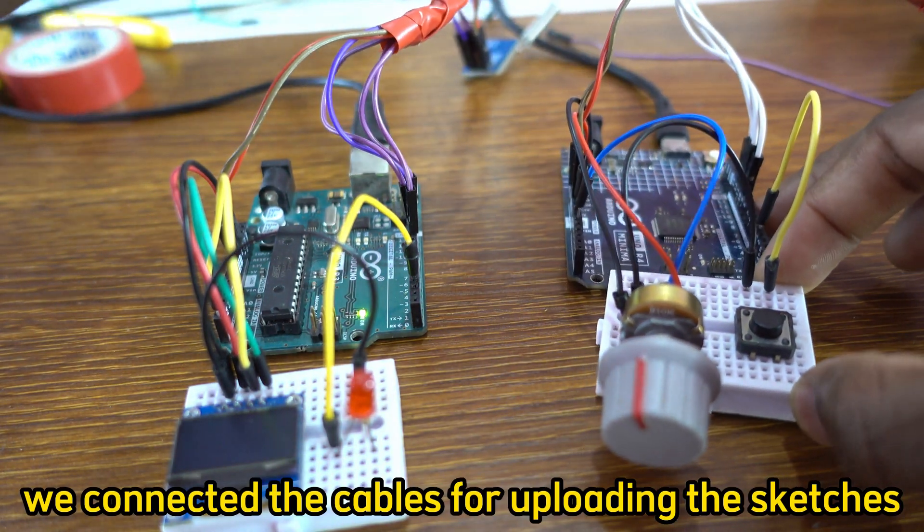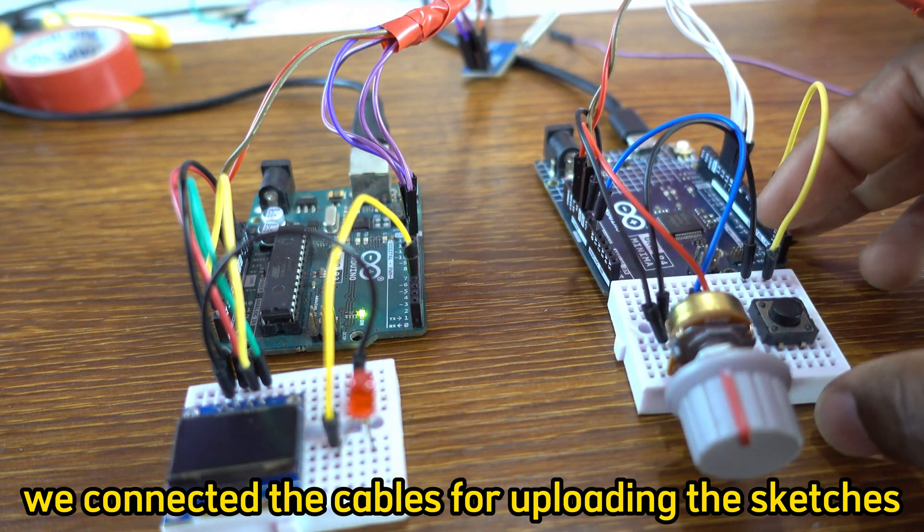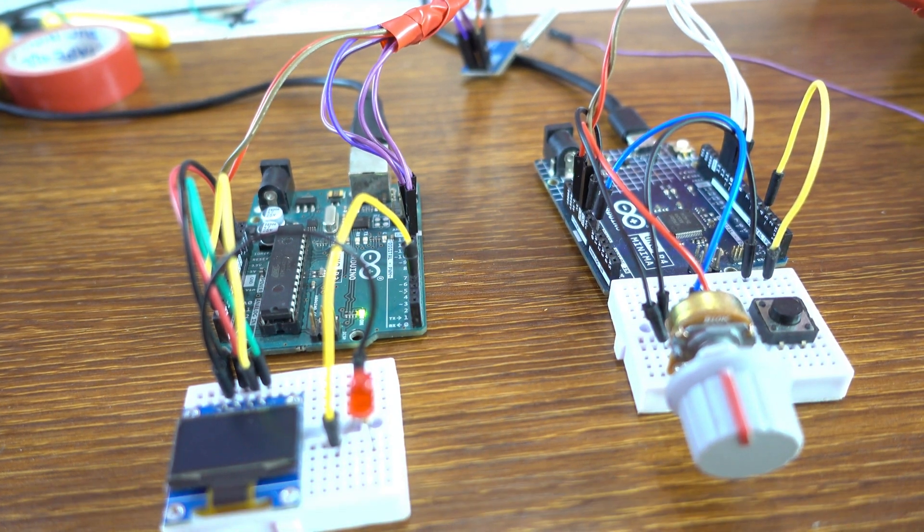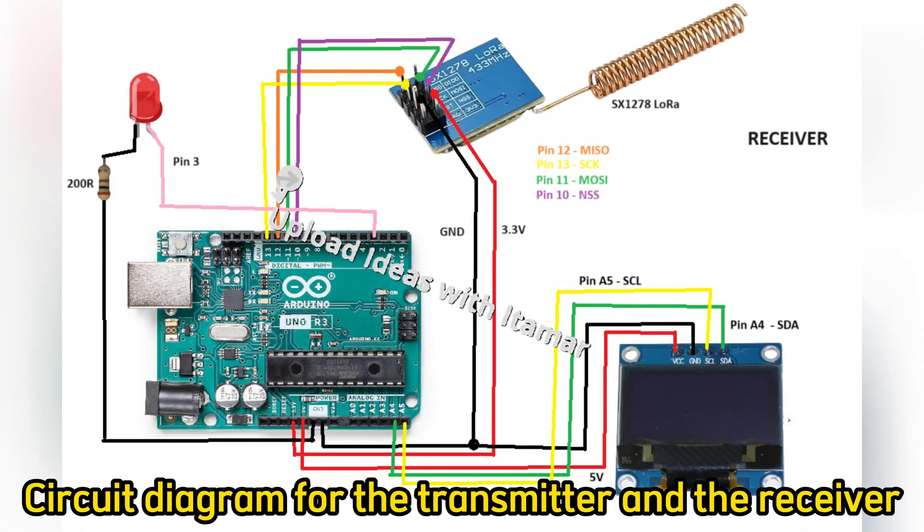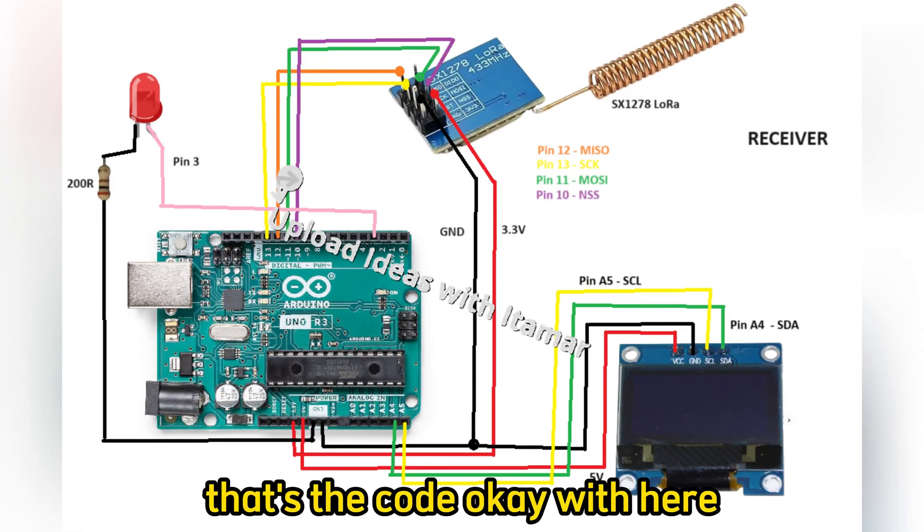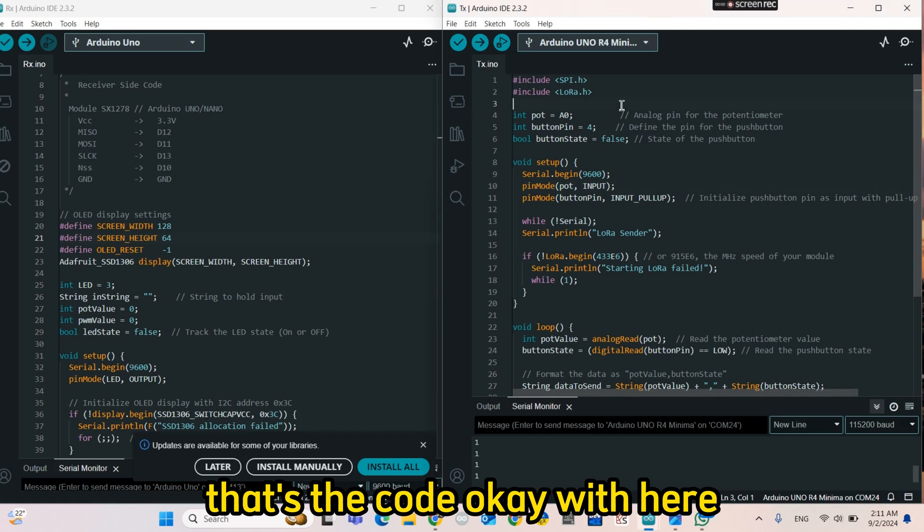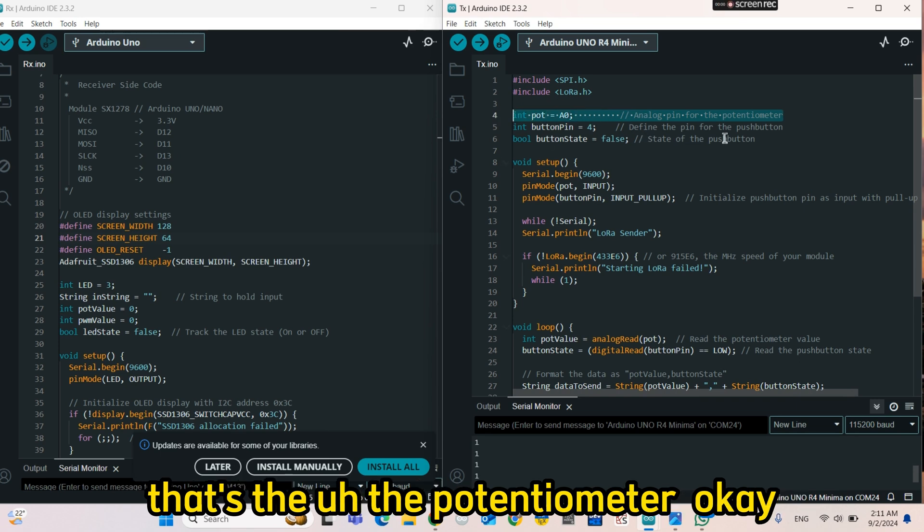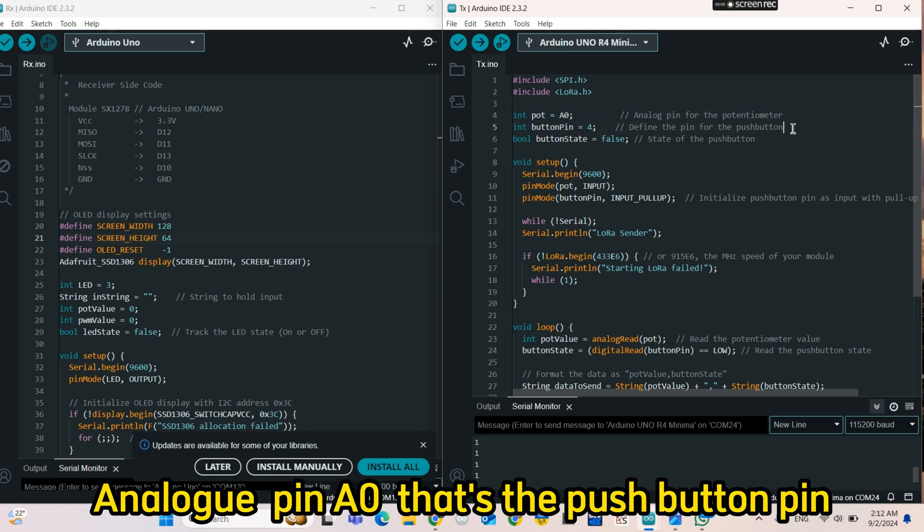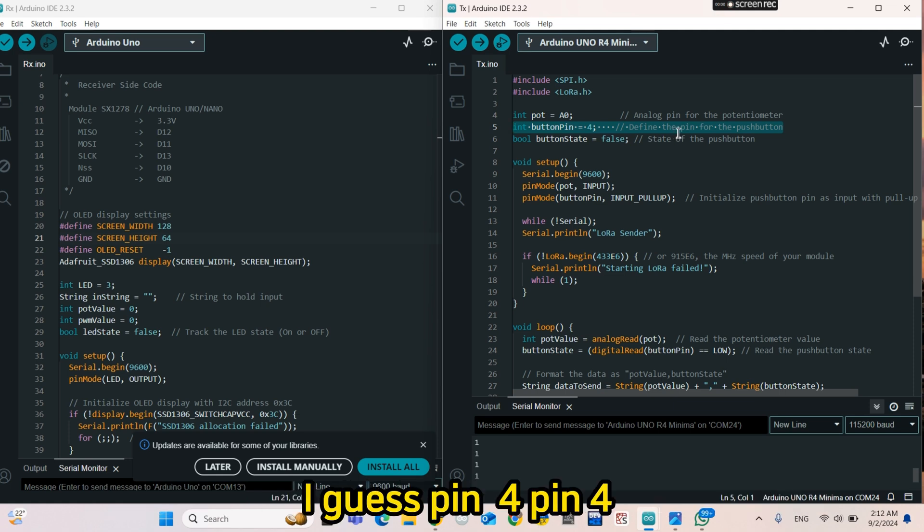We connected the cables for uploading the sketches. Now that's the circuit diagram for the transmitter and the receiver. That's the code, this is the transmitter code, very simple. That's the potentiometer - analog pin is zero. That's the push button pin, I guess pin 4. Pin 4.